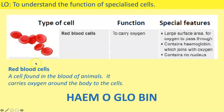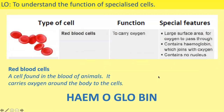Draw a diagram of a red blood cell, write the name, the function, and the special features — set it out in a table format. When you've done all four cells, cut them out to make separate cards: diagram, name, function, and special features. Put them to one side — we're going to make these cards for every type of specialised cell. Pause the video and do that now.